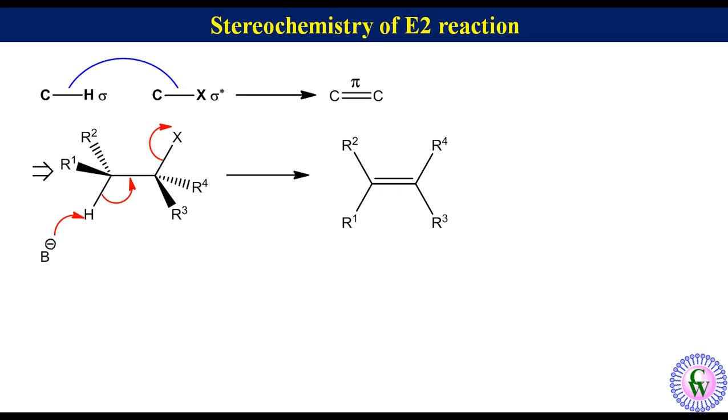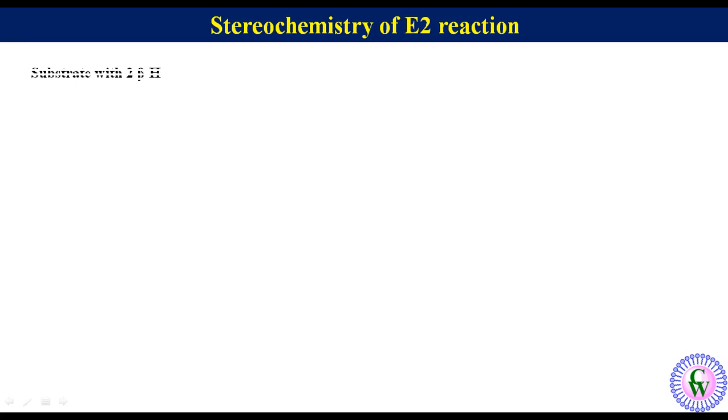If there are two beta hydrogen atoms, E2 elimination may lead to the formation of two stereoisomeric alkenes, trans and cis, in unequal proportion.